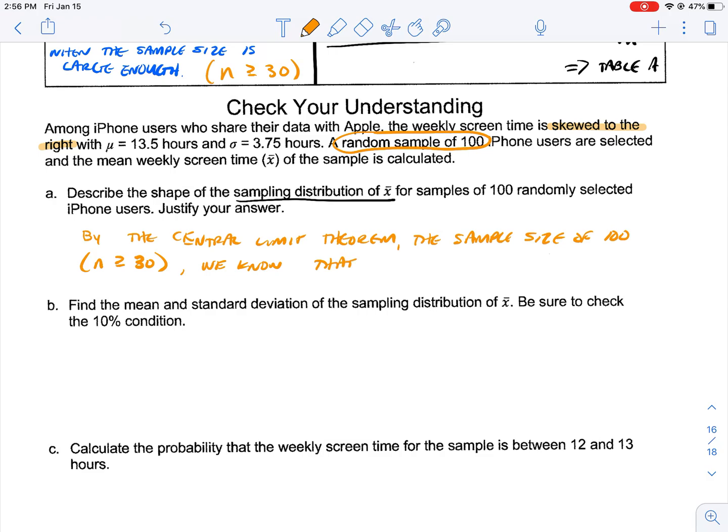So even though it's skewed to the right, because we have a sample size that's 100, we know that the sampling distribution of x-bar is approximately normal.